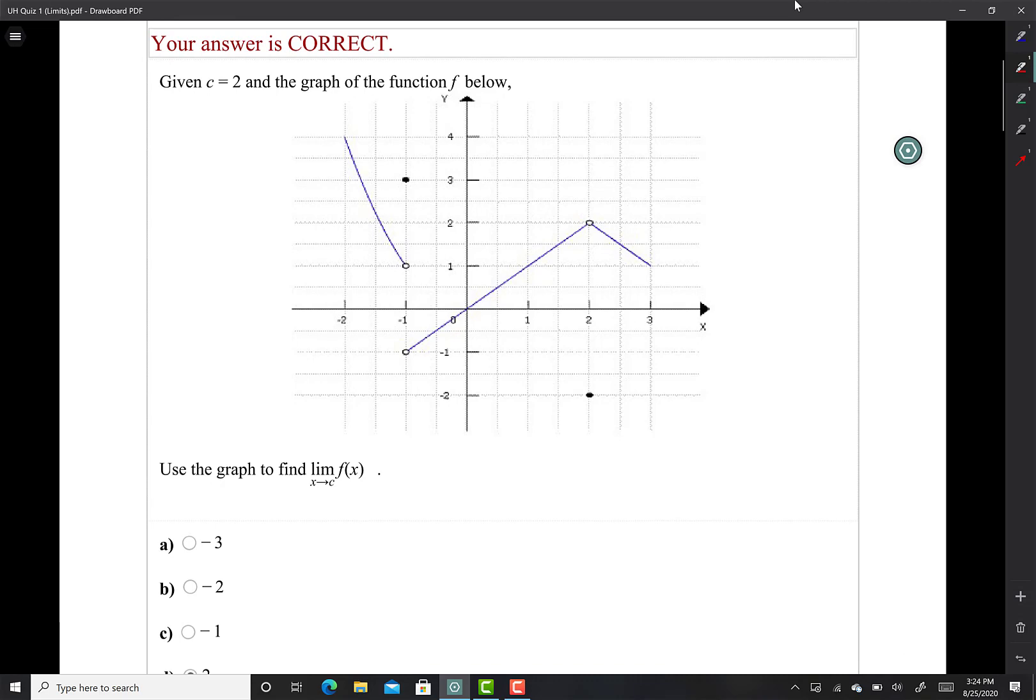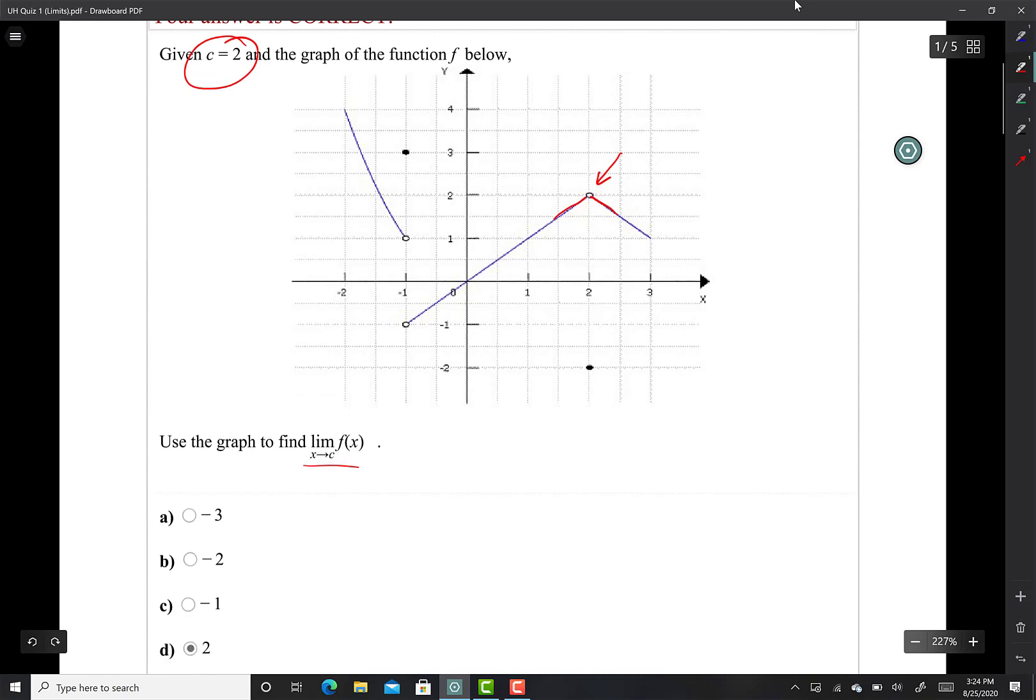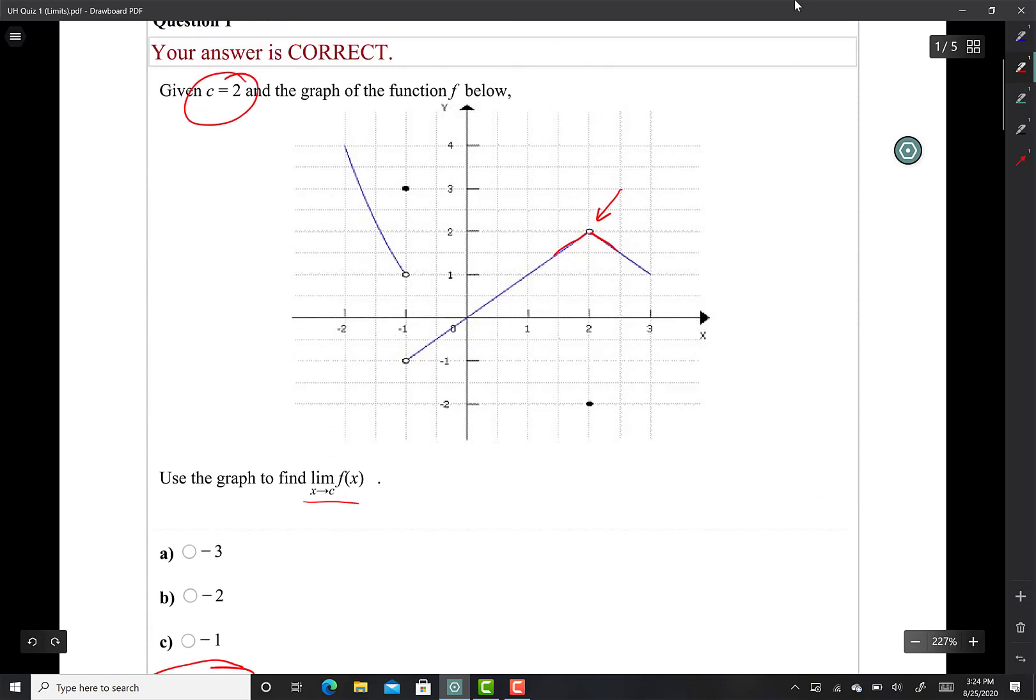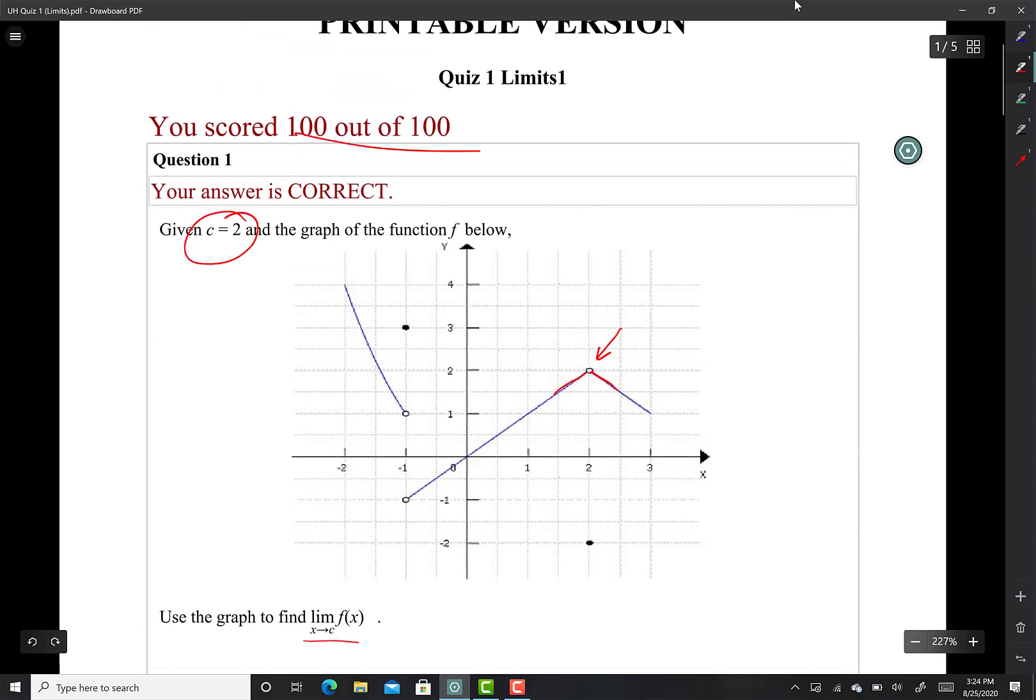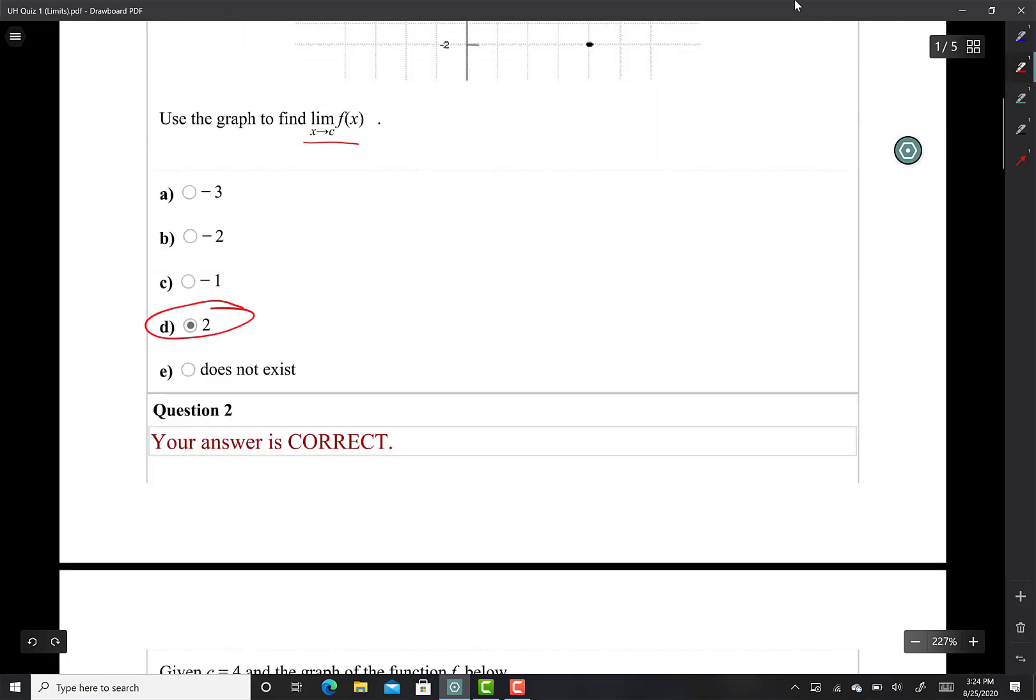Given C equals 2 and the graph of the function f below, find the limit as x approaches C. Remember that C was already 2. If I approach 2 from the left it looks like it's 2. If I approach 2 from the right it looks like it's 2. Since it says the limit, I'm going to choose the y value of 2.